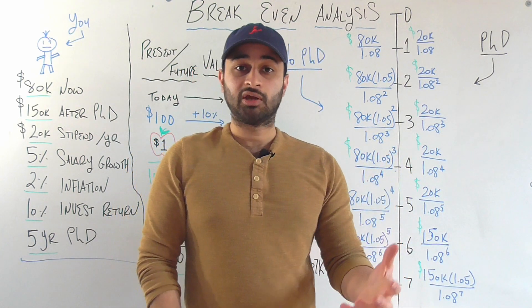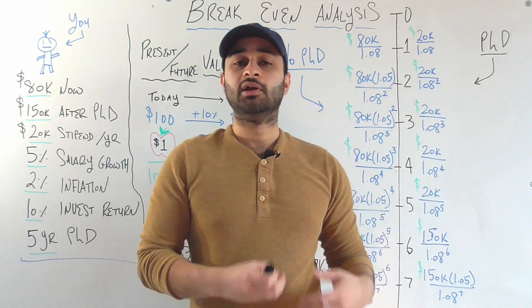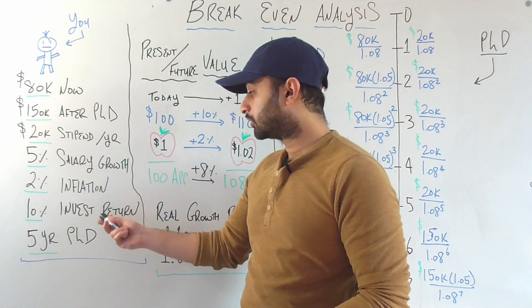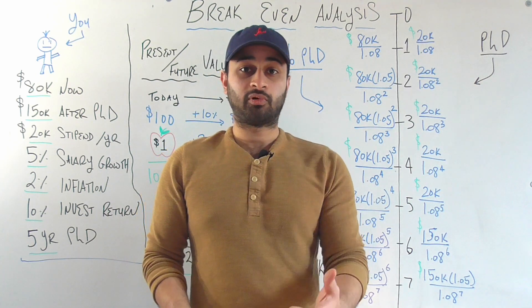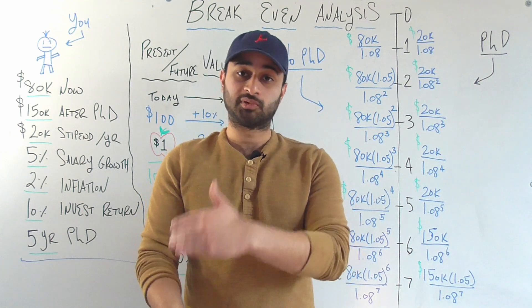So this could be something like the stock market where you invest in a stock that is reliably slowly growing over time and you think that you can reliably get a 10% increase in your money per year. And the final parameter is that the PhD program is going to take you five years to complete from start to finish.